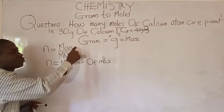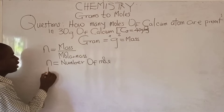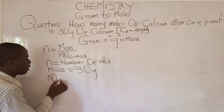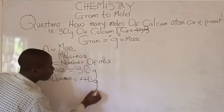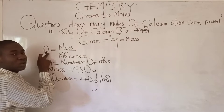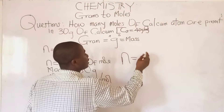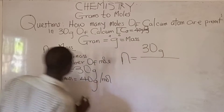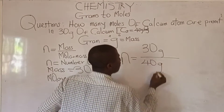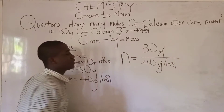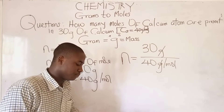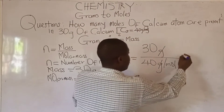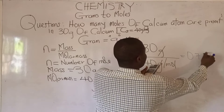The formula is: number of moles = mass over molar mass. The mass of calcium given in the question is 30 grams, and the molar mass of calcium is 40 grams per mole. So number of moles equals 30 grams over 40 grams per mole. Grams cancels grams, so 30 over 40 gives us 0.75 moles.